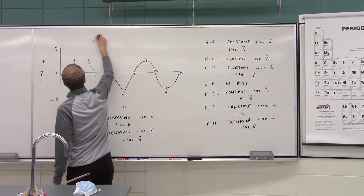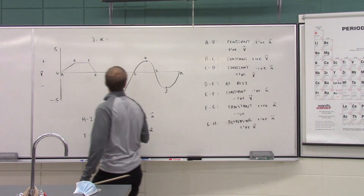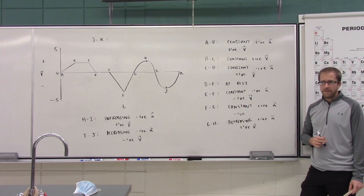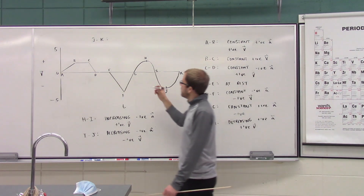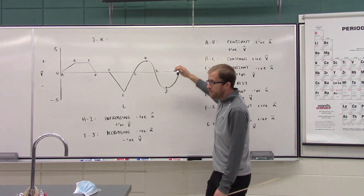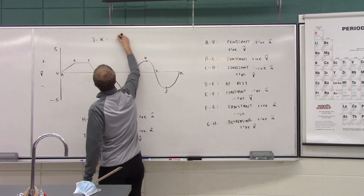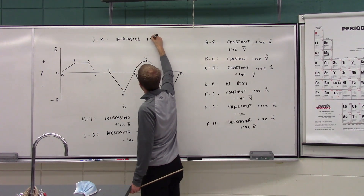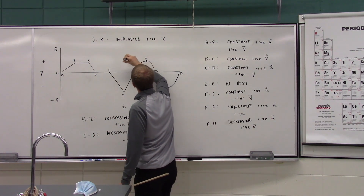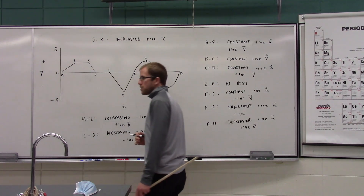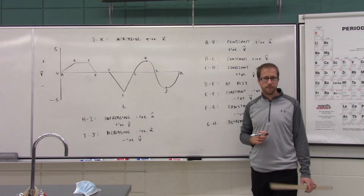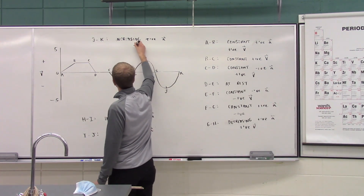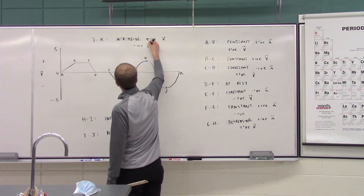From J to K: increasing positive acceleration — slope is getting steeper. We're approaching zero, so we're slowing down, and velocity is negative, meaning we're traveling in the opposite direction of acceleration.